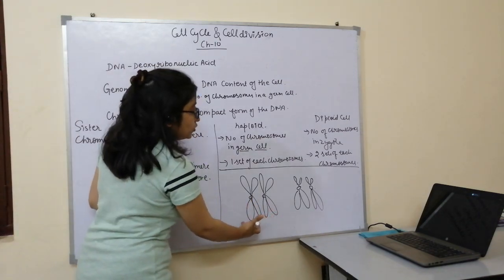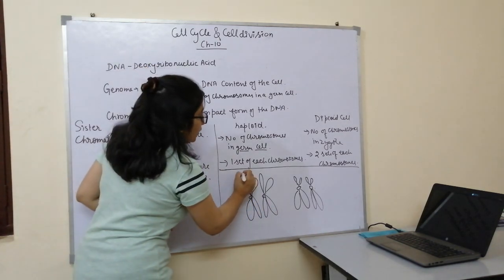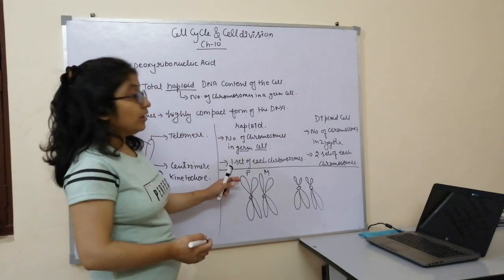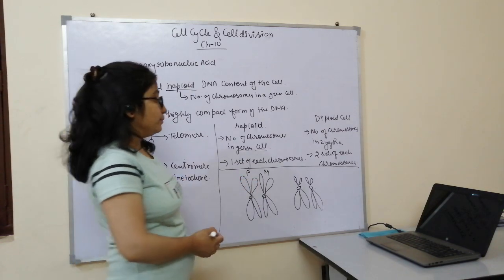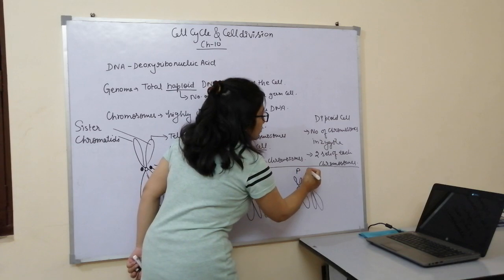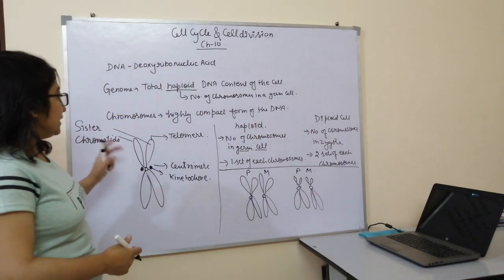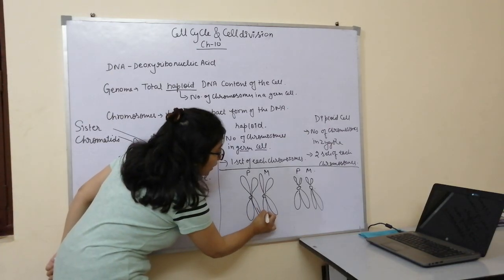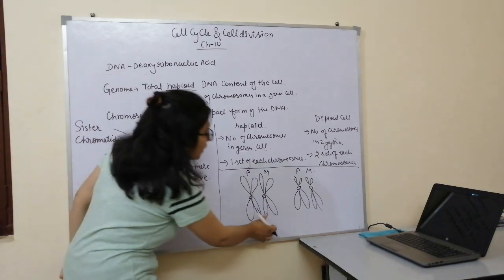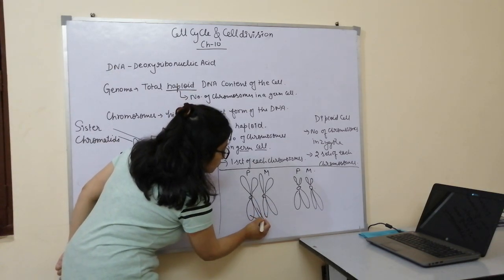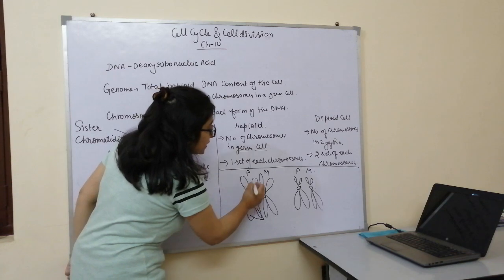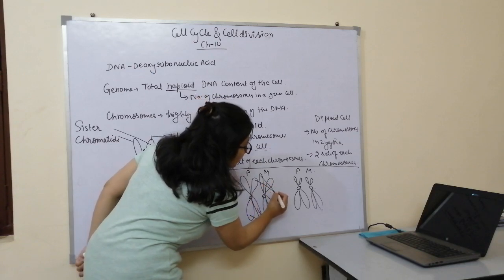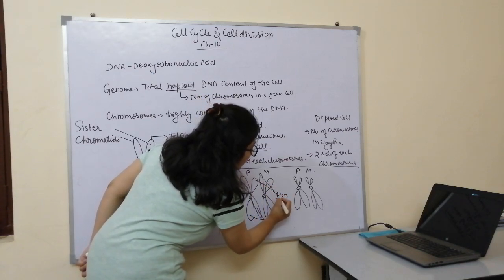In a diploid cell we have two sets of each type of chromosome. We call one the paternal chromosome and the other the maternal chromosome — one comes from the paternal side and the other from the maternal side. The two arms of a single chromosome are called sister chromatids, whereas one arm from one chromosome and one arm from its homologous partner are called non-sister chromatids.